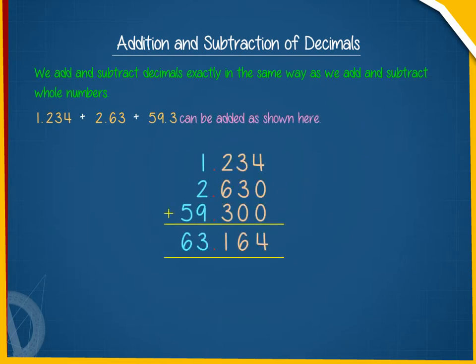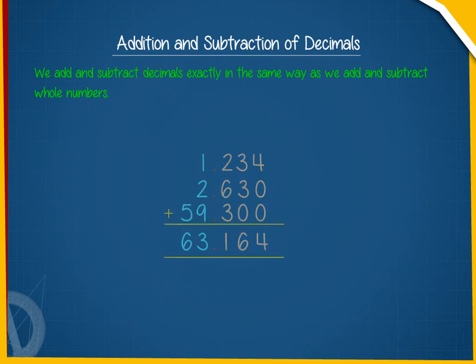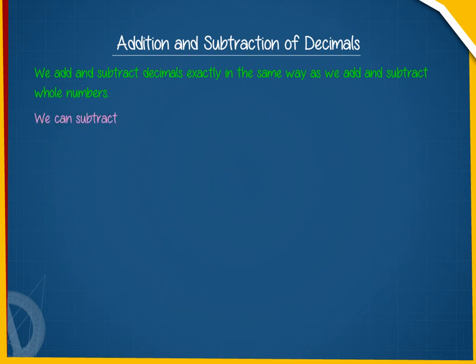We have to ensure that decimals are arranged one below the other in such a way that decimal points fall in the same column, one below the other. Similarly, we can subtract 18.36 from 219.9.